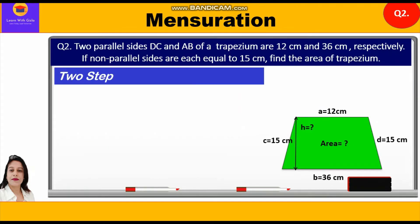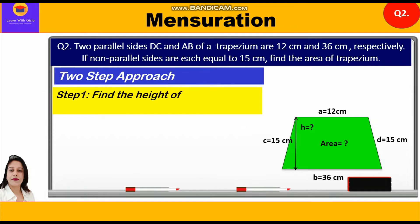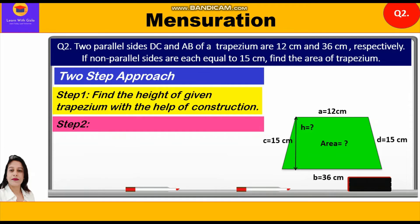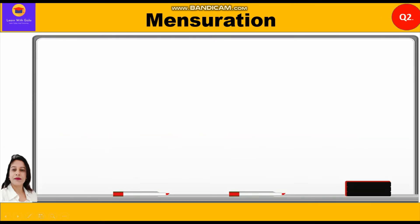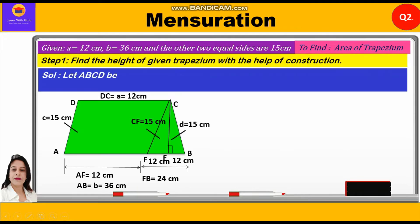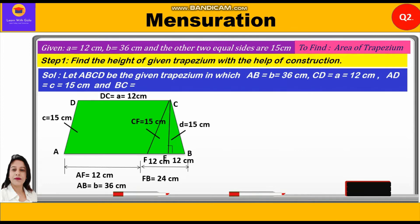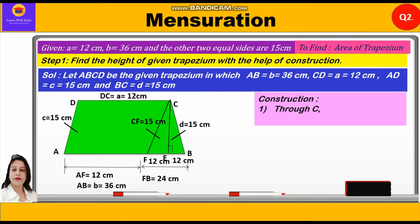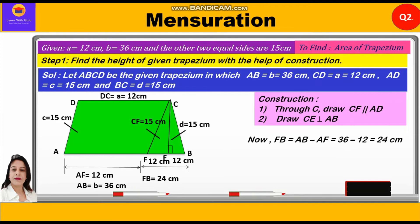This question involves two steps. Step 1: find the height of the trapezium using construction. Step 2: find the area. Let ABCD be the given trapezium where AB = B = 36 cm, CD = A = 12 cm, AD = C = 15 cm, and BC = D = 15 cm. For construction: first, draw CF parallel to AD; second, draw CE perpendicular to AB. Now FB = AB minus AF = 36 minus 12 = 24 cm.